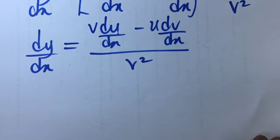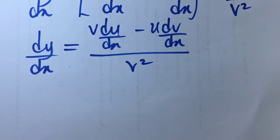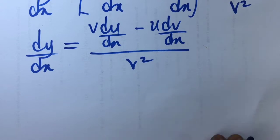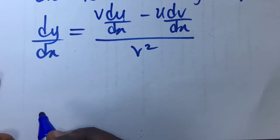Now let's take an example to illustrate how to use the quotient rule of differentiation. When should we use it? You should use the quotient rule of differentiation when a particular function y is expressed as a ratio of two functions, as a quotient of two functions. That is when you should be using the quotient rule.